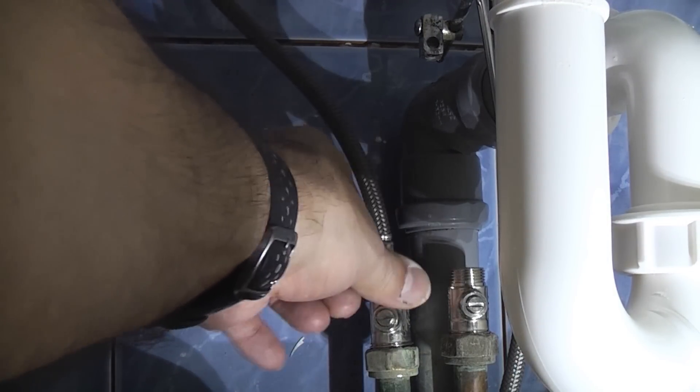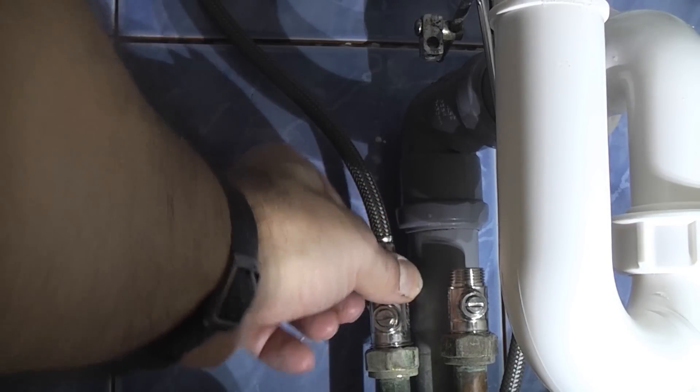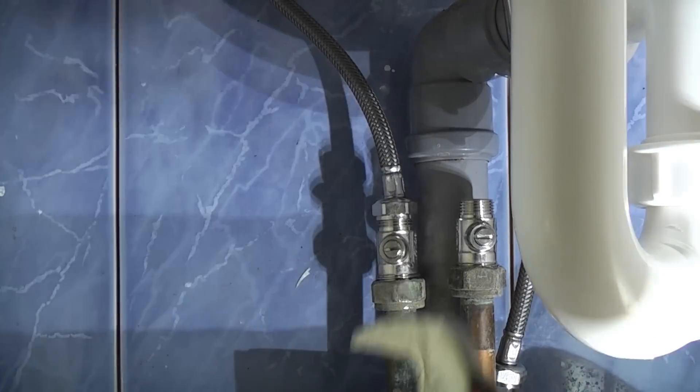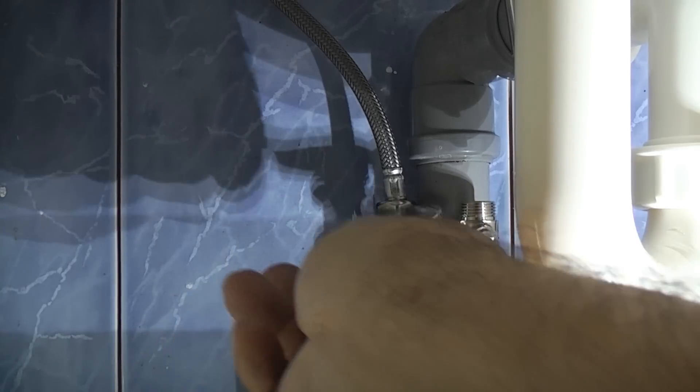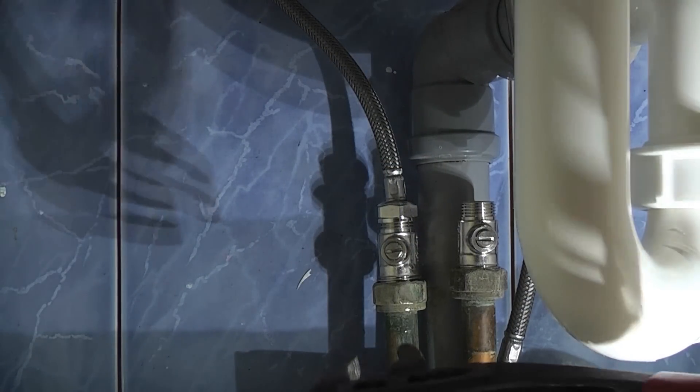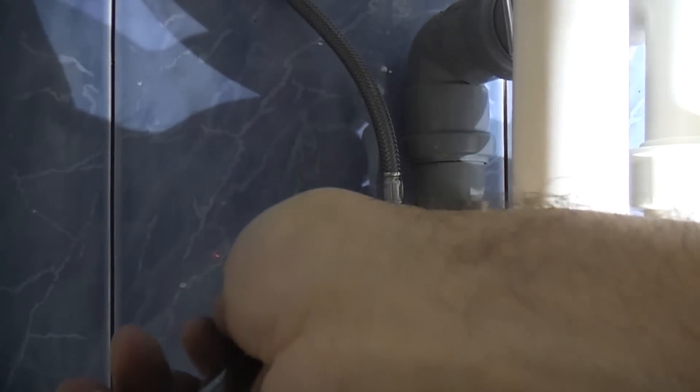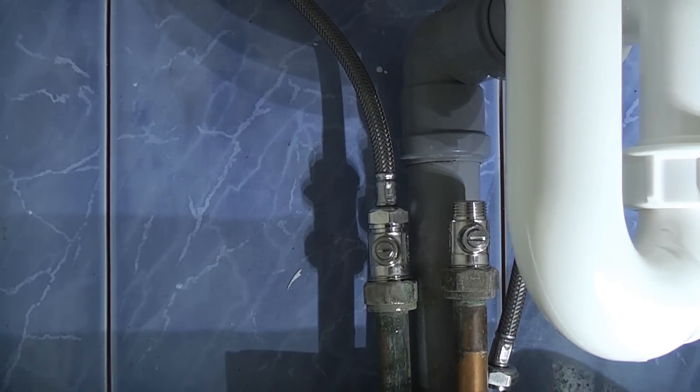So we now just need to screw that onto there making sure that you don't cross-thread it. And the nuts on these are actually 19mm so I can actually use a 19mm open ended spanner for this. So we just need to nip that nut up; we don't need to go mad. Once it starts getting tight like so we're just going to take a pair of water pump pliers and we're just going to grip the isolation valve. And that is actually getting tight now. And obviously you don't want to go mad because you're just going to be cutting into the rubber.